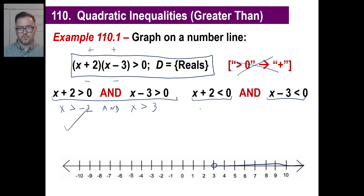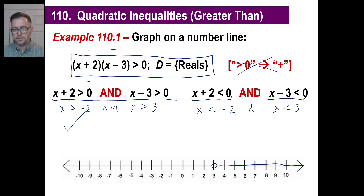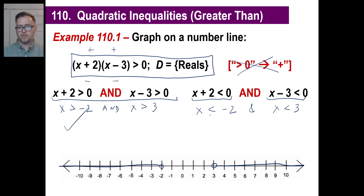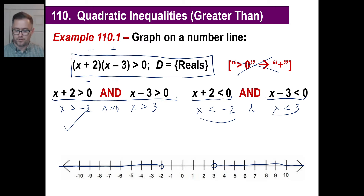The other possibility: x plus 2 is less than zero and x minus 3 is less than zero. That means x is less than negative 2 and x is less than 3. If x has to be less than negative 2 and less than 3, it's going to be everything to the left of negative 2, because that fits both possibilities. If you choose something like 1 or 2, that's not less than negative 2. So that's what your graph looks like.